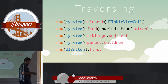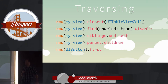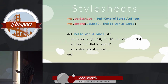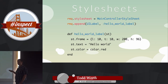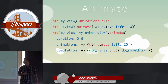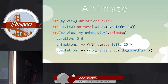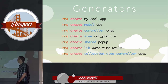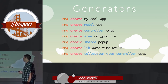Traversing is just like jQuery — it allows you to go up and down the subview stack. You don't use it too often, but when you need it, it's awesome. UI view lifecycle: appending views, creating views, that kind of thing. RMQ stylesheets — a replacement for TeaCup and MotionKit. Animations make animations easy. And generators for creating your app, models, controllers, and views.